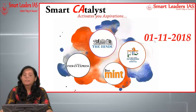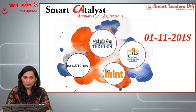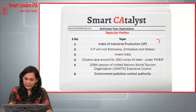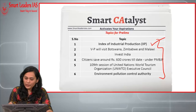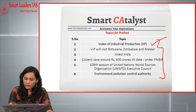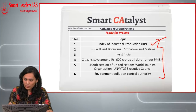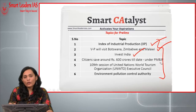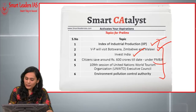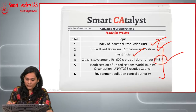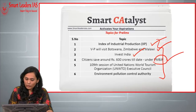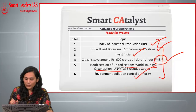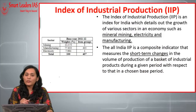Hello friends, welcome to Smart Catalyst. Today we'll be seeing the current affairs of 1st November 2018. The articles we'll be covering for the prelims are six: the first one is about the Index of Industrial Production, the second is a map-based question on countries of Africa, the third is based on Invest India, the fourth talks about Pradhan Mantri Bharatiya Jan Aushadhi Pariyojana, the fifth is about the United Nations World Tourism Organization, and the final one talks about the Environment Pollution Control Authority.